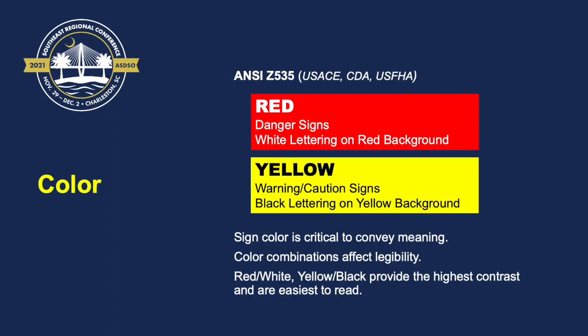Sign color is critical to conveying meaning, and the color combinations between your background color and your lettering will greatly affect legibility and effectiveness. Fortunately, ANSI Z535, the Corps of Engineers, the Canadian Dam Association, and even the U.S. Federal Highway Administration all recognize two commonalities. First, a danger sign should be red background with white lettering. Second, a warning sign should be yellow background with black lettering. The reason for red-and-white and yellow-and-black is that those provide the highest contrast, making them the easiest to read.